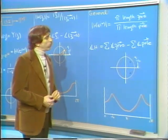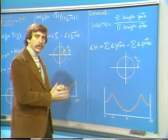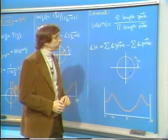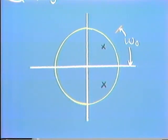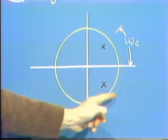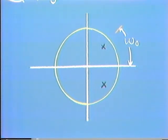Let's consider a Z-transform with a pole-zero pattern consisting of a pair of complex conjugate poles in the Z-plane. These poles have radius r and angular spacing omega 0 — one pole at angle omega 0, the other at minus omega 0. Using the geometric interpretation of the frequency response, let's sketch out roughly what we would expect the frequency response to look like.